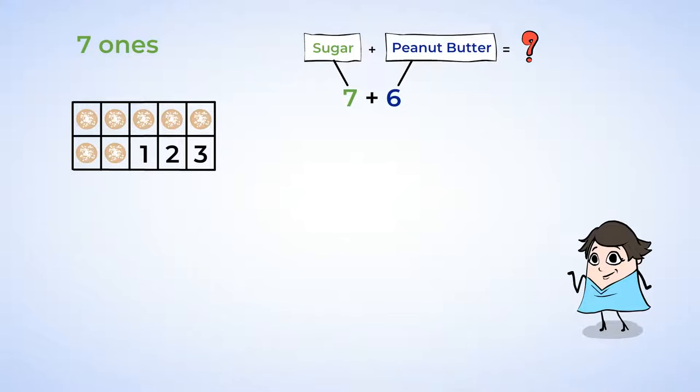With these 3 ones, you can say 7 plus 3 is 10. Here's the group of 10. But where will these 3 ones come from to make the 10? That's right, the peanut butter cookies.